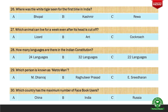First question: Where was the white tiger seen for the first time in India? The options are A. Bhopal, B. Kashmir, and C. Leva. And the right option is C. Leva.